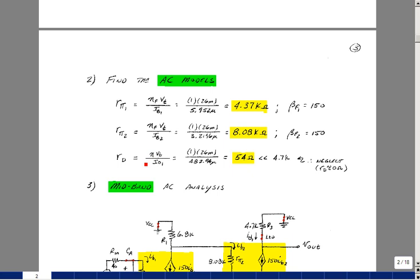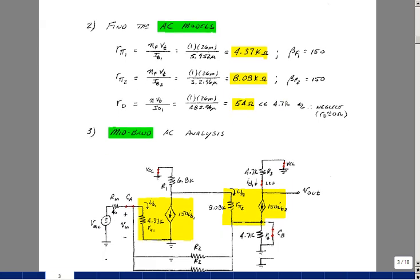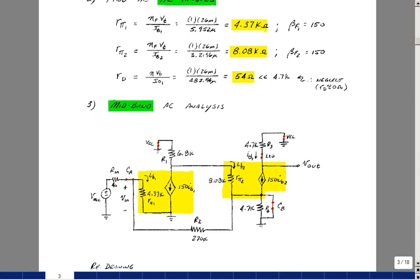We also have a resistance associated with the LED, which is likewise eta V sub T over, in this case, I sub D, which is the same as the collector current of transistor 2. It gives us around 54 ohms. Now that's in series with 4.7K, so basically we could throw it away, treat it as if it were zero. Trying to get a ballpark number as we do things.